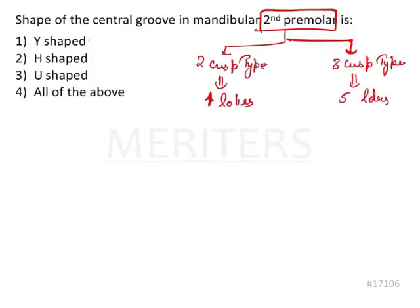Going back to the question: the Y-shaped groove is seen in the three-cusp type, and H and U-shaped grooves are seen in the two-cusp type. Therefore, the answer to this question is all of the above.